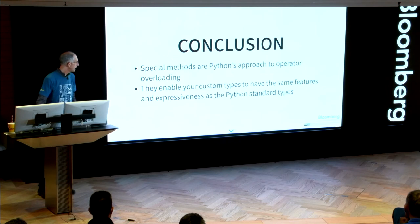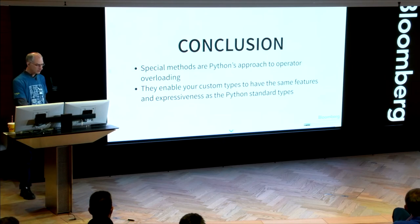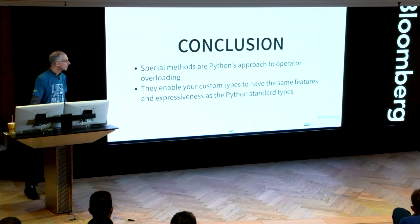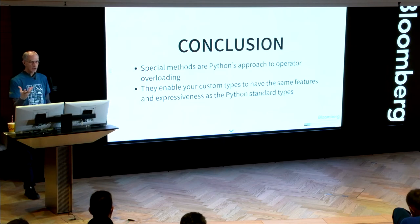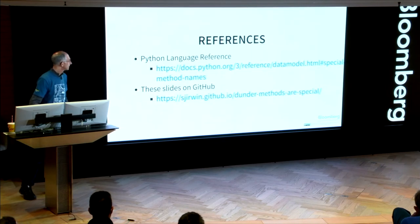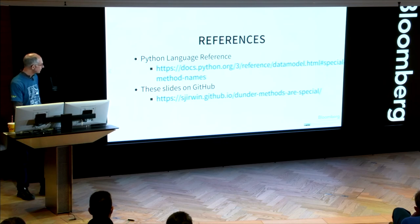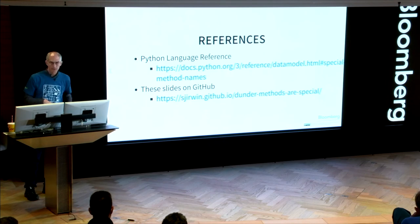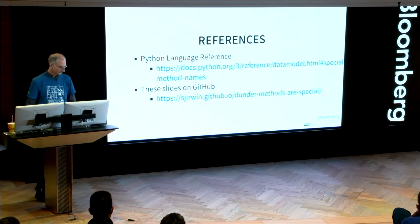So in conclusion, we have special methods are Python's approach to operator overloading. And they enable your custom types to have the same features and expressiveness as the Python standard types. So essentially what the Python language has done is expose the inner workings and hooks to allow you to write very fully featured expressive code with your own classes. References. This is a direct link to the language reference. And then this is the link to the slides. The GitHub repo is basically sjerwin or github.com slash sjerwin, which I should have put on the slide. But I forgot. And that's it. Thanks.